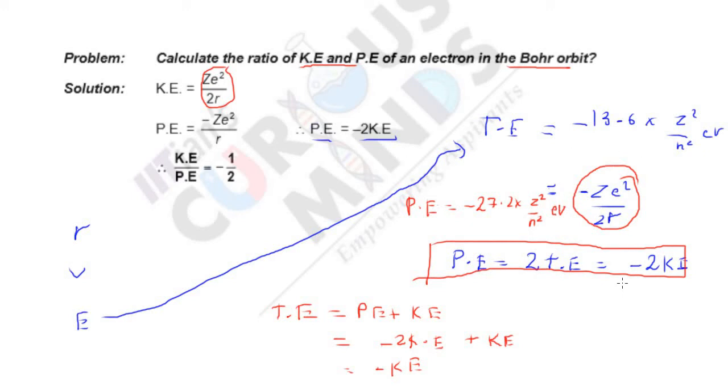For this derivation, Z E squared by 2R, Z E squared by R, you can just check your reference books. You can find it clearly or just google it. Thanks for watching the video.